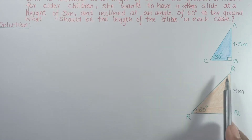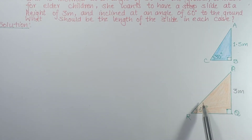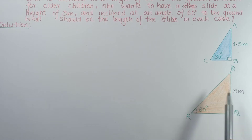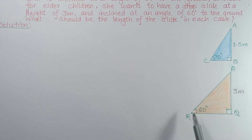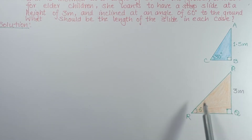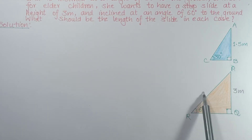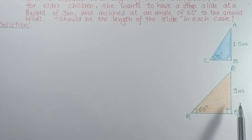In the first case, the setup is the same — it is a slide triangle. The height changes: in Case 1 the height equals 1.5 meters, and in Case 2 the height equals 3 meters. We will use the sine formula to find the slide length.